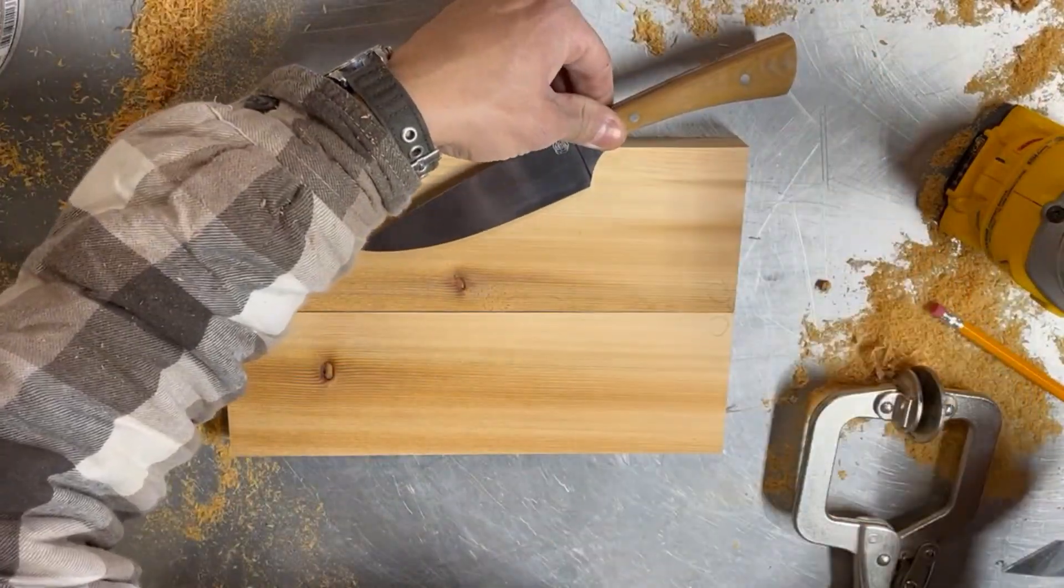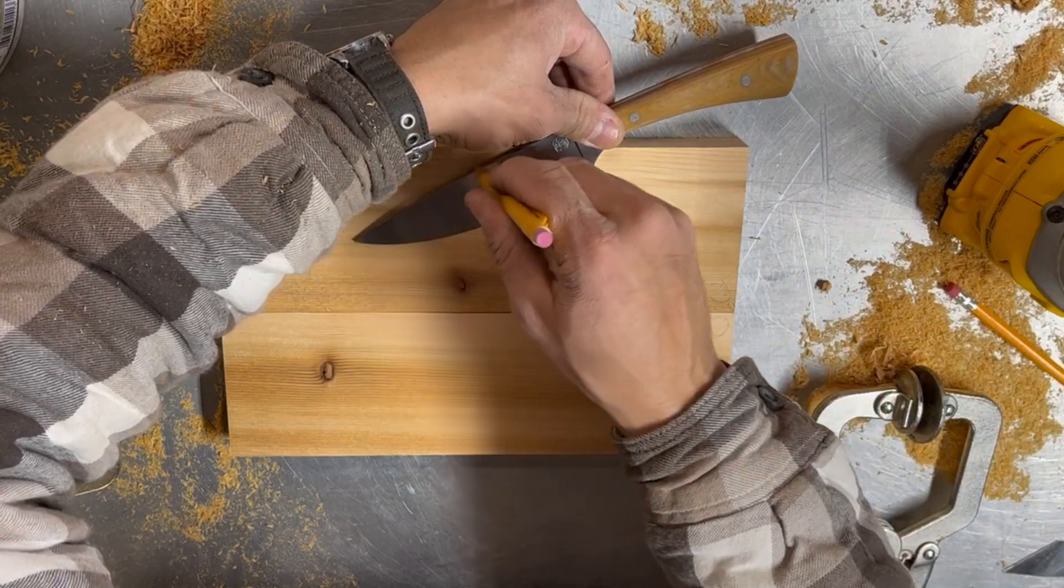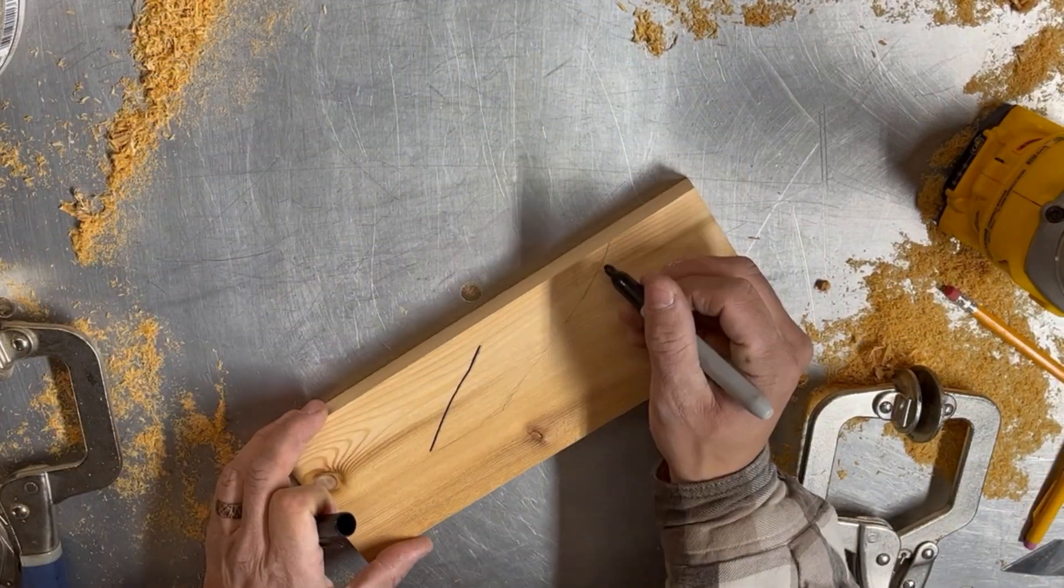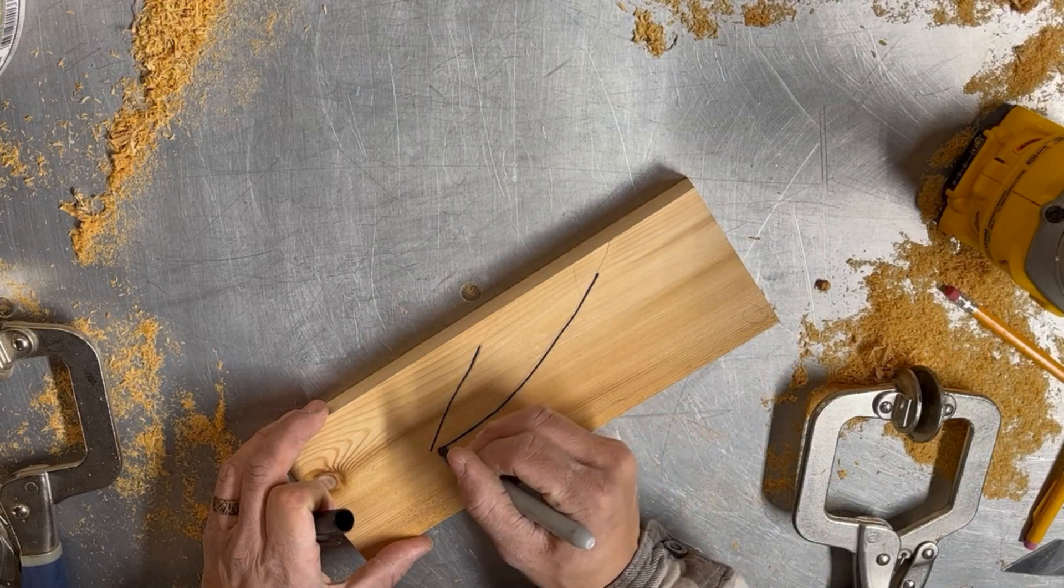I then trace out the blade exactly where it's going to sit within the knife block. To make the lines easier to see I go over them with a sharpie marker, however do not go all the way to the edge of the wood with this because it will bleed into the wood.